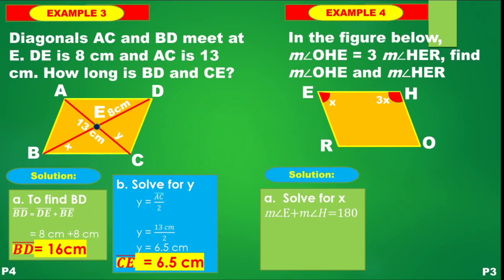Substituting: X + 3X = 180. So 4X = 180. We divide both sides by 4 — the numerical coefficient of X. Therefore, X equals 45 degrees.